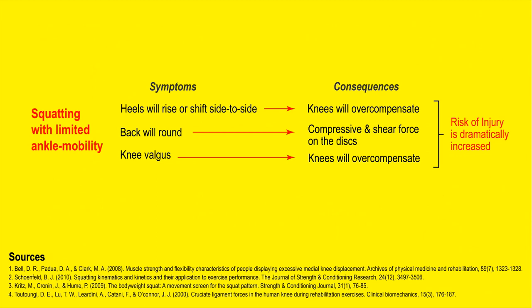When you lack adequate ankle mobility and try to squat with heavy weight, it is rarely just the local area that suffers — it's a cascade of problems. If your ankles lack mobility or heels shift, the knees will start to overcompensate. Your back will start to round, promoting compressive and shear forces on the discs of your spine. Knee valgus will also occur as compensation. They say a chain is only as strong as its weakest link, and this mindset is very applicable to bodily restrictions.